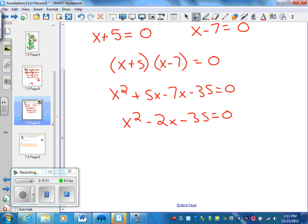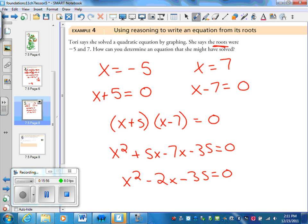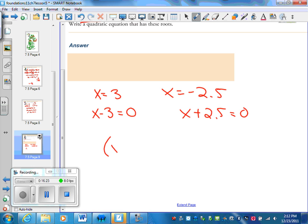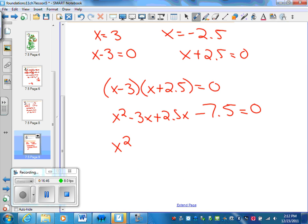So in this case the language they used was the roots. There's another way she could have worded that. She could have said the x intercepts of a graph are 3 and negative 2.5. Same thing. What we're doing is we're saying x equals 3, x equals negative 2.5. Setting these each to be 0, x minus 3 equals 0, x plus 2.5 equals 0. And now I'm using them as the factors. Expanding x squared minus 3x plus 2.5x minus 3 times 2.5 I believe is 7.5. So combining the terms in the middle, we should have x squared minus 0.5x minus 7.5 equals 0.